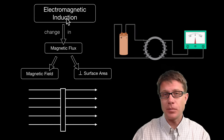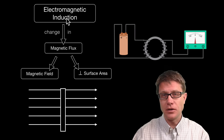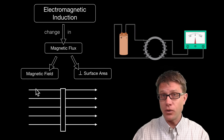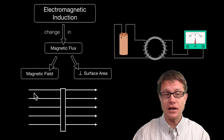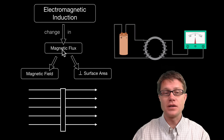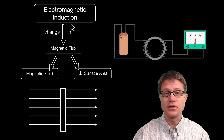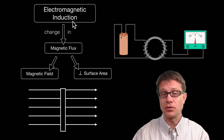So what happened right when he closed that circuit? Well the magnetic field before he closed the circuit was zero. But then he added this magnetic field — so was there a change in magnetic flux? Yes. And so was there electromagnetic induction? Yes. So it created current.